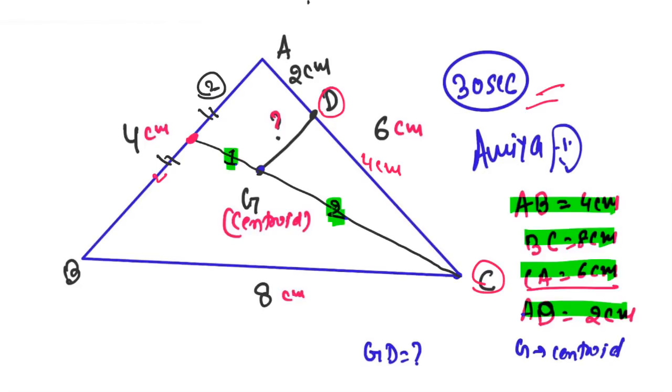And you know that the median divides 1 is to 2, or 2 is to 1. In the same way, if you have the same ratio on the left hand side, 2 is to 1.